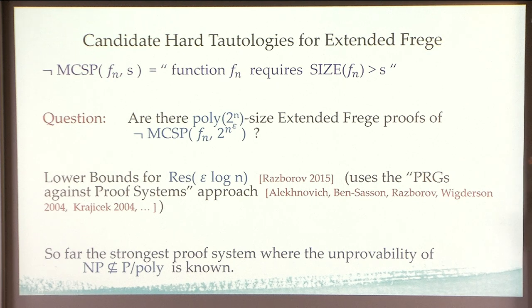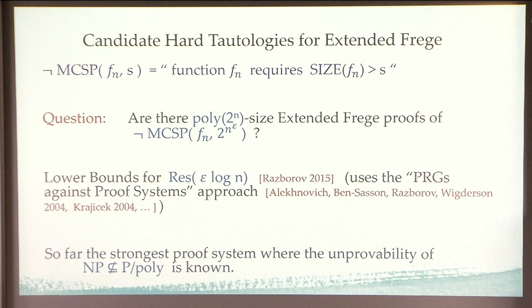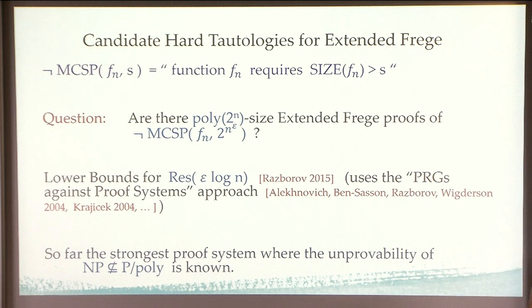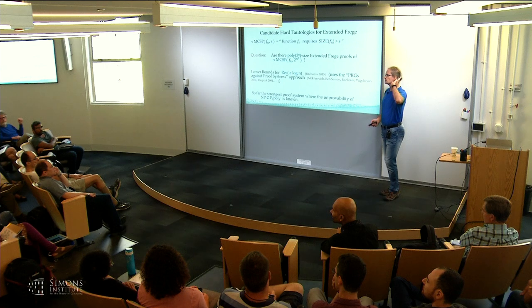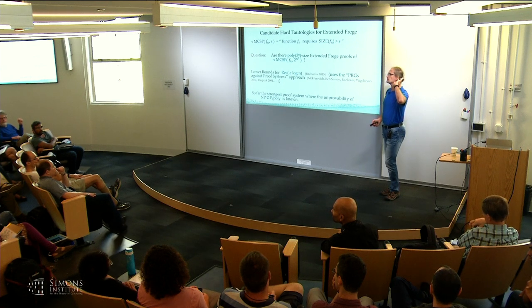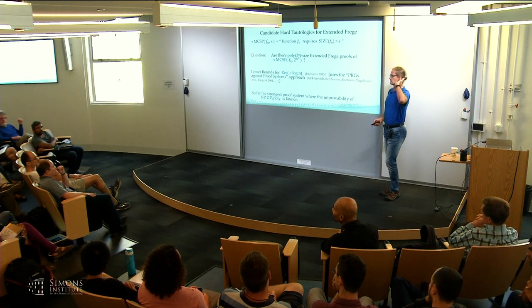If f_n is easy then of course you cannot prove it's hard. But if f_n is any hard function, the proof will probably require super-polynomial size — at least that's the conjecture. This approach to proving lower bounds for such tautologies also goes via pseudorandom generators adapted to be secure against proof systems, going back to work by Alekhnovich, Ben-Sasson, Razborov, Wigderson, and Krajíček from around 2004.